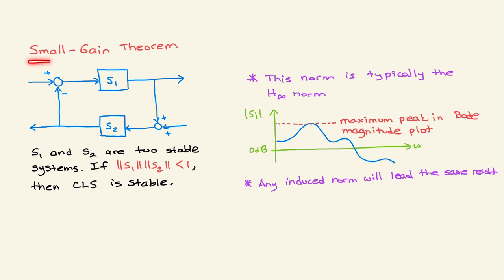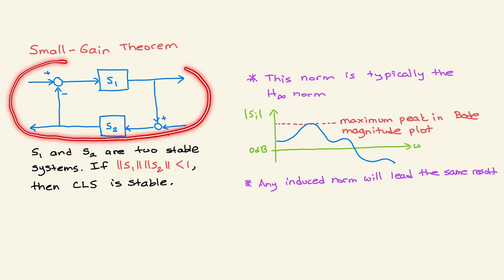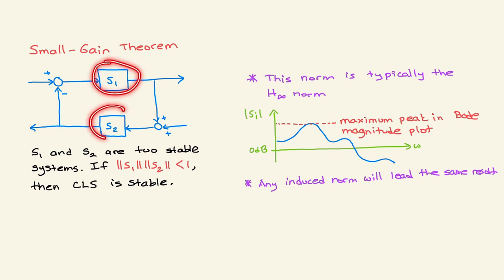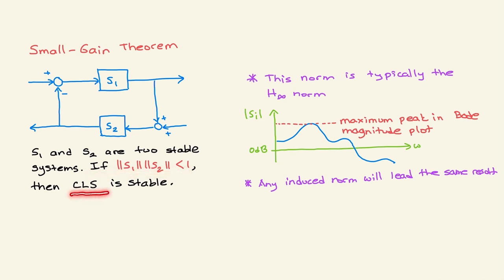With regard to the small gain theorem, consider this feedback interconnection: you have two systems S1 and S2. Assume that S1 and S2 are two stable systems. If the norm of S1 and the norm of S2 are both strictly less than one, then the closed-loop system is stable.